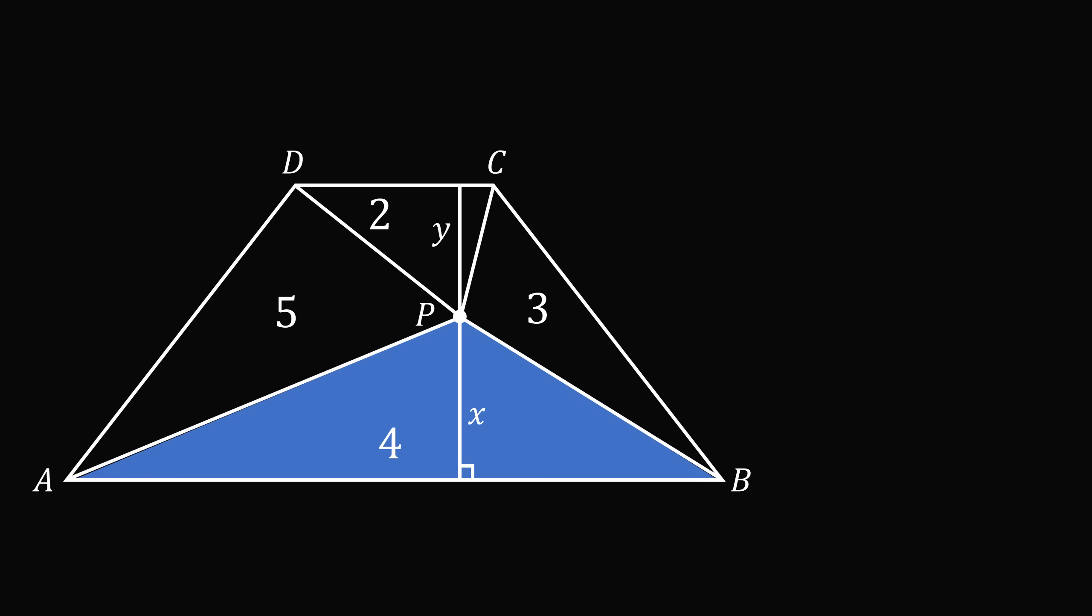Since triangle APB has an area equal to 4, x times AB is equal to 2 times 4. Since triangle CPD has an area equal to 2, y times CD is equal to 2 times 2.